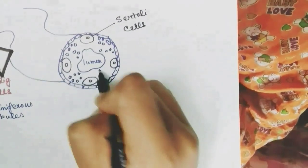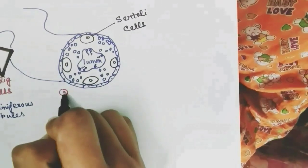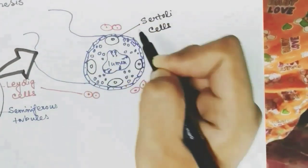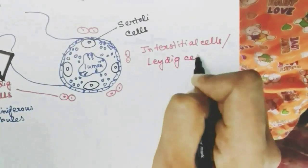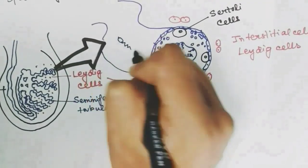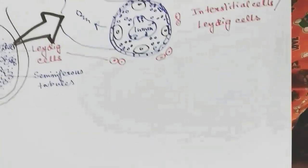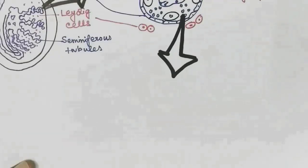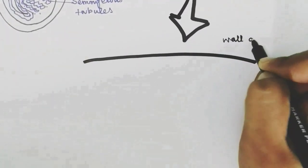Other than Sertoli cells, sperm mother cells are also present in the wall of the seminiferous tubule, and the whole process of spermatogenesis occurs in this wall. After spermatogenesis, sperms come into the lumen of the seminiferous tubule and go to the epididymis where they are stored. The interstitial cells or Leydig cells help in this process of spermatogenesis.